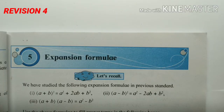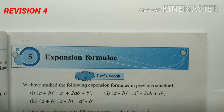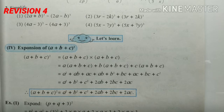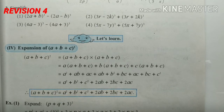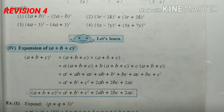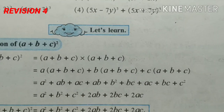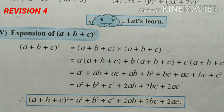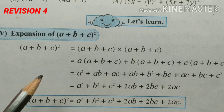Hello students, in standard eight maths the fifth chapter we are going to revise. In segment four, division number four of the last topic of the expansion formulae. This is our last topic that is expansion of (a + b + c) square. The expansion process has been given in our learning video.